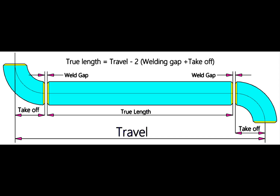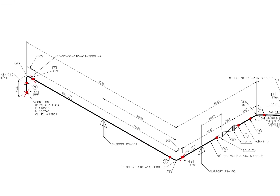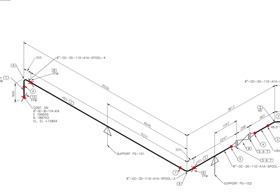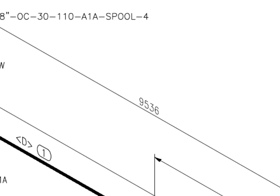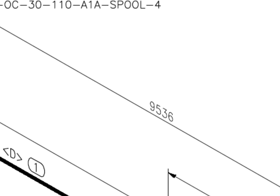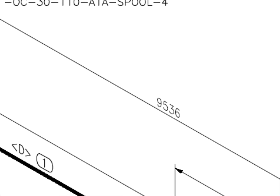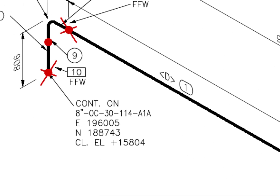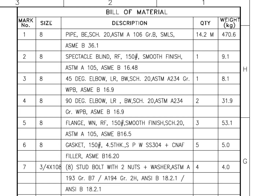Let us go to some examples. Here the travel length is 9536. Let us check the diameter of the pipe. What is the item number? Item number is 1. Go to the material list. Item number 1 is bevel end, schedule 20, seamless pipe.